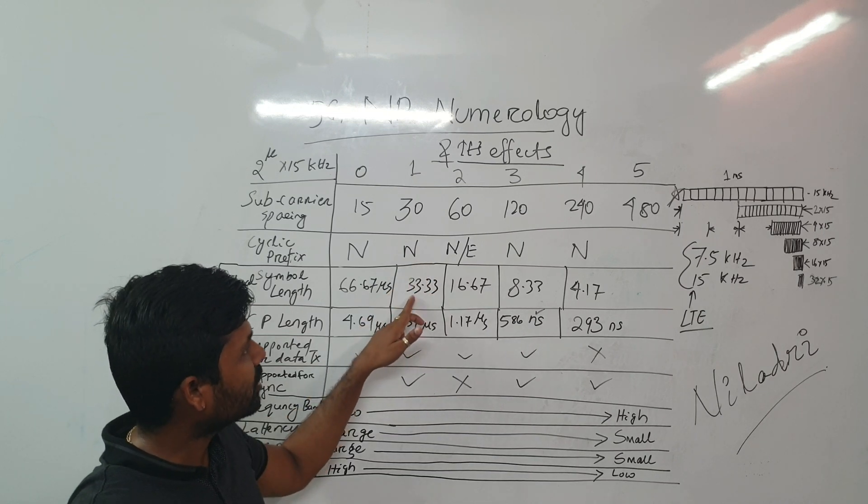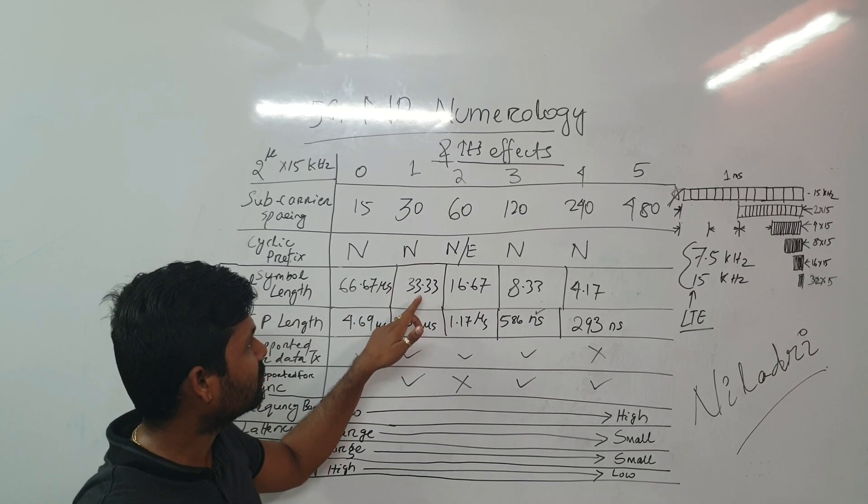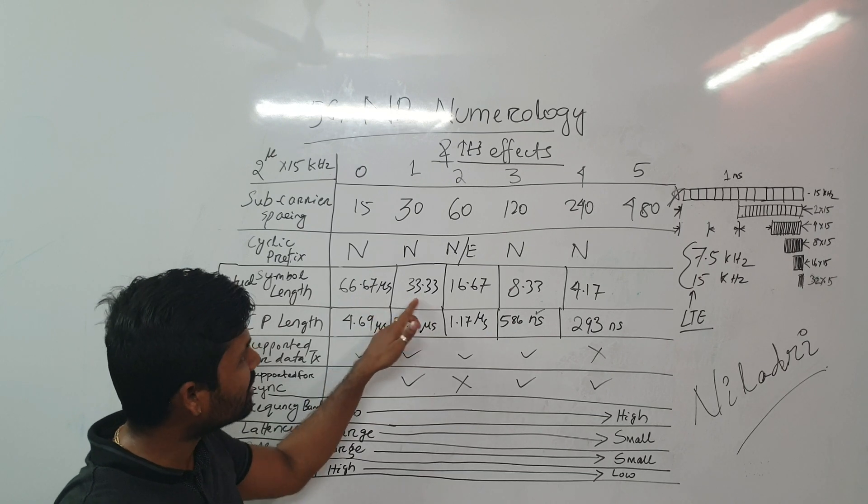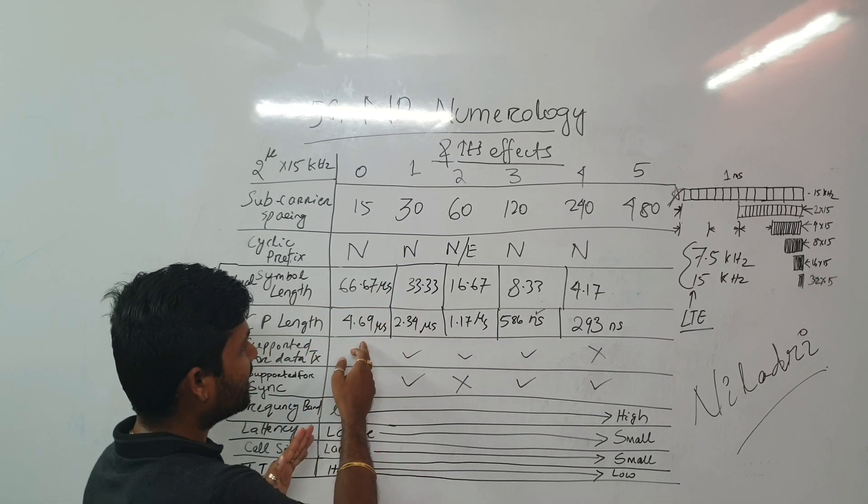So here we are using symbol time 33.33. So symbol time is reduced by half. And then cyclic...